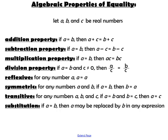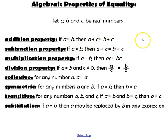These are some algebraic properties of equality that you learned before, but we're going to need to use them. Let A, B, and C be real numbers. The addition property of equality states that if you have A equal to B, then if you add a number to both sides of the equation, the equation is still true.